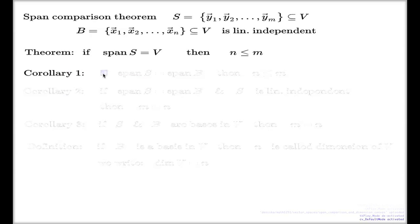Corollary one says this: this setting at the top of the slide applies to all of the statements I'm about to show you. So if, under this setting, so S and B, two subsets of my V, finite subsets, and B is linearly independent...